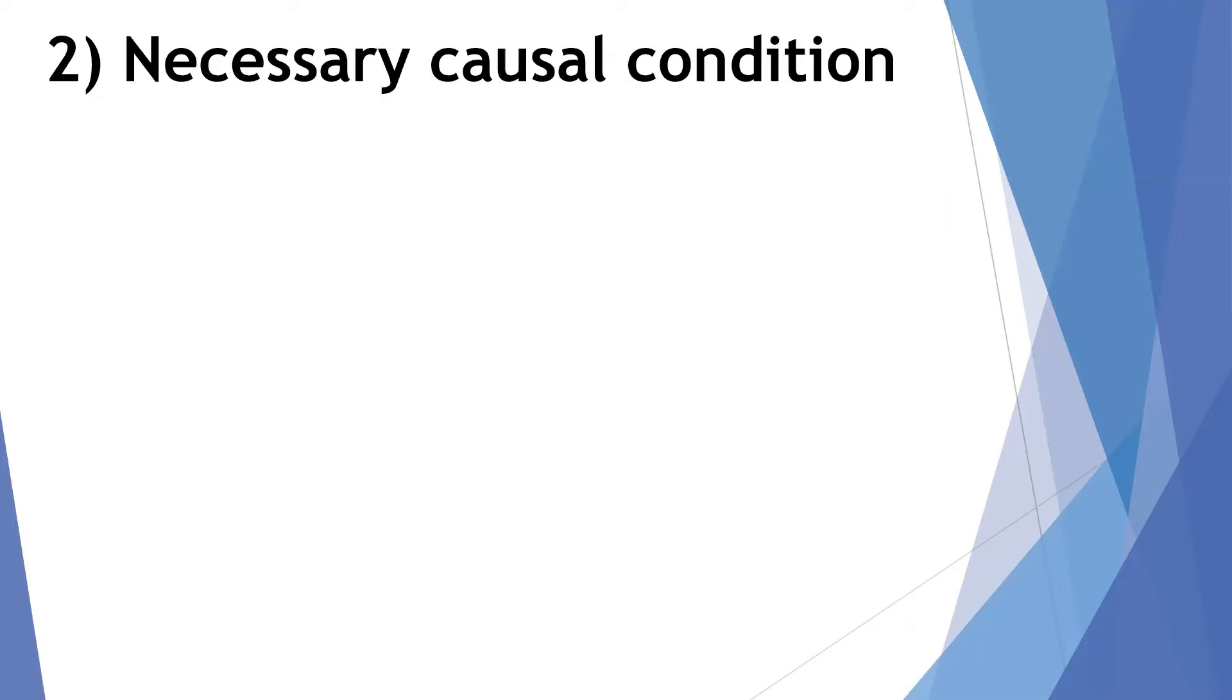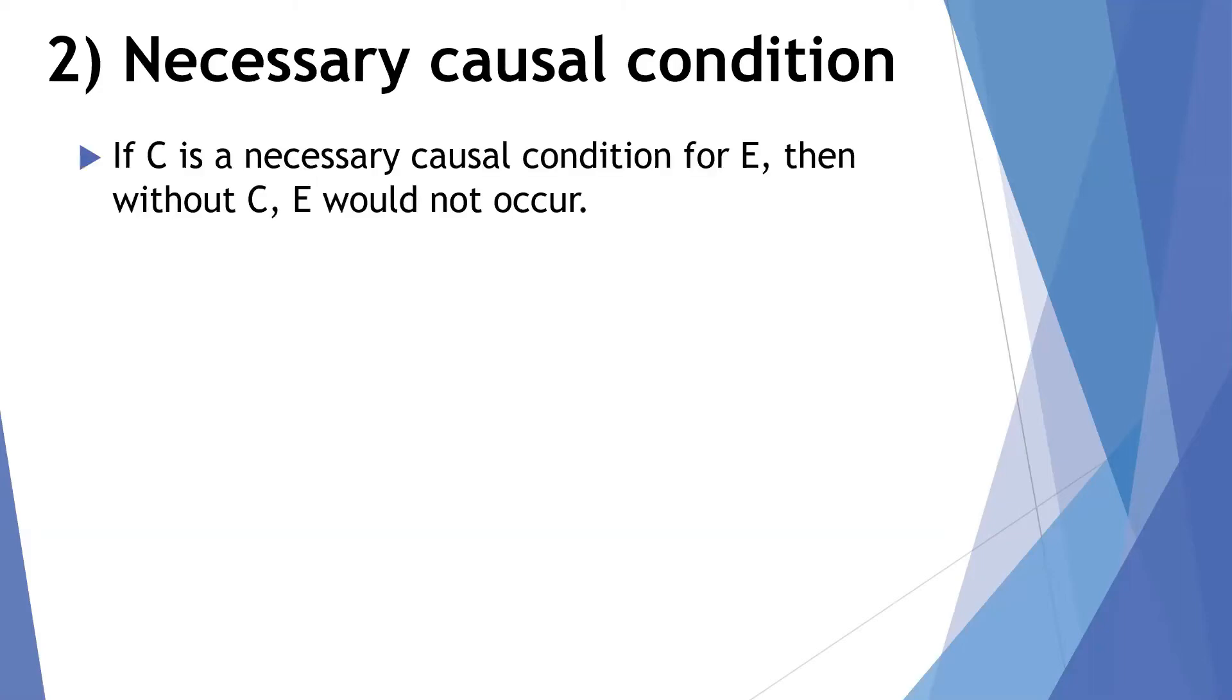A necessary causal condition can be described by this formula. If C is a necessary causal condition for E, then without C, E would not occur. C must be there in order to get the effect E. So if E occurred, we know that C was there. We know that C also occurred.